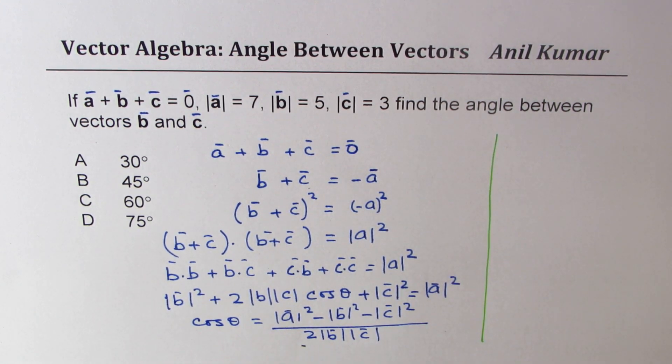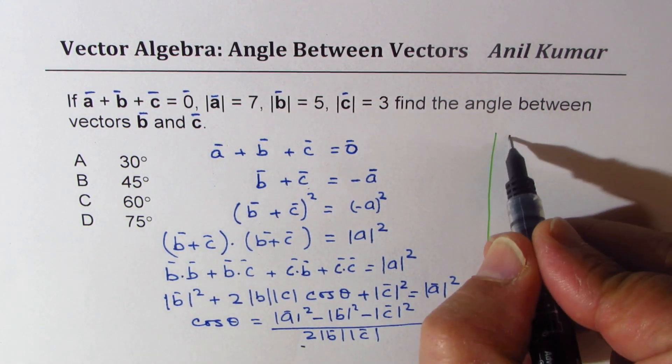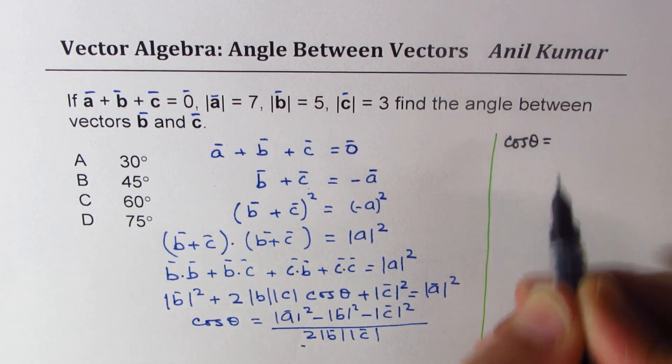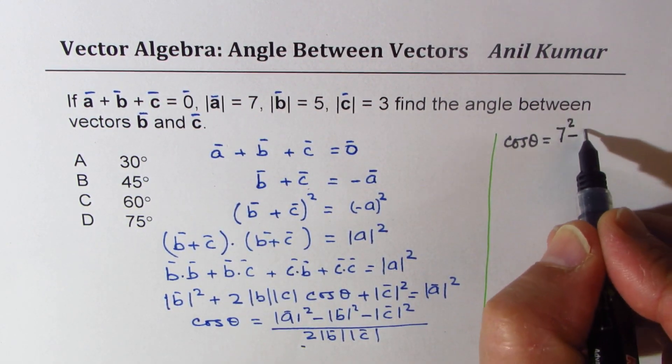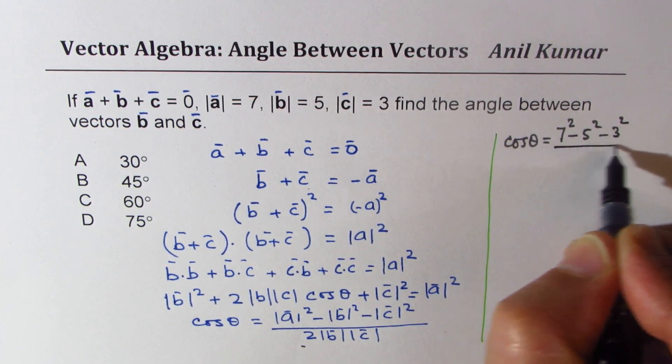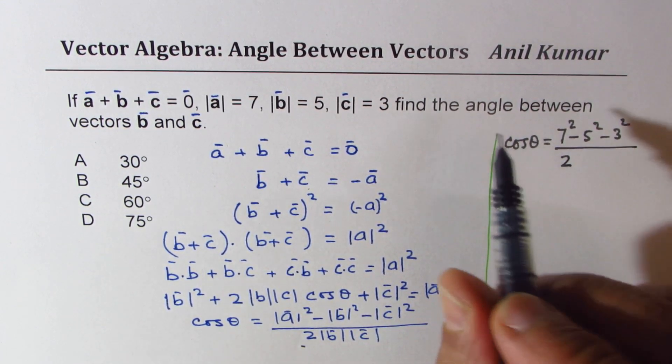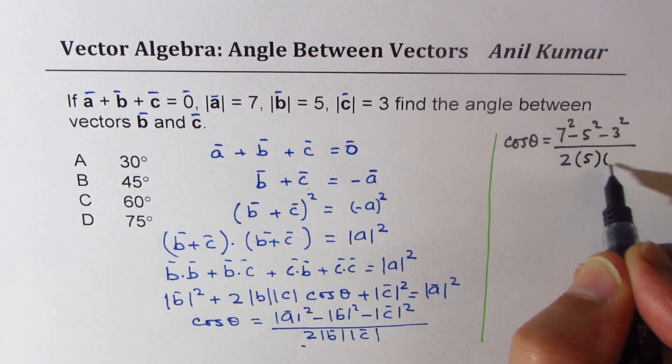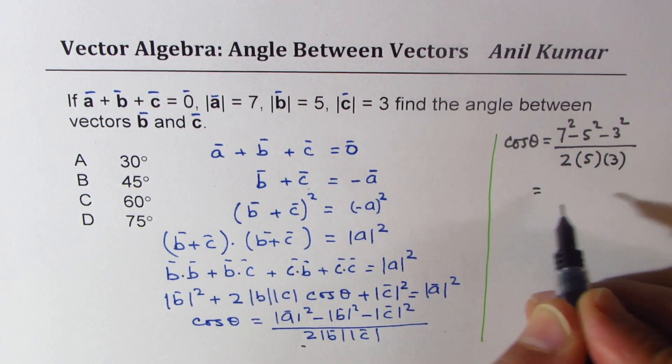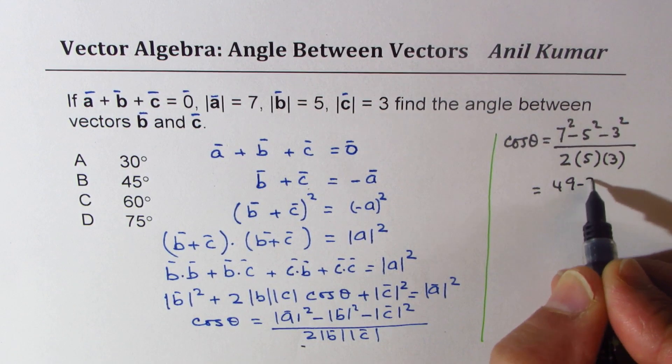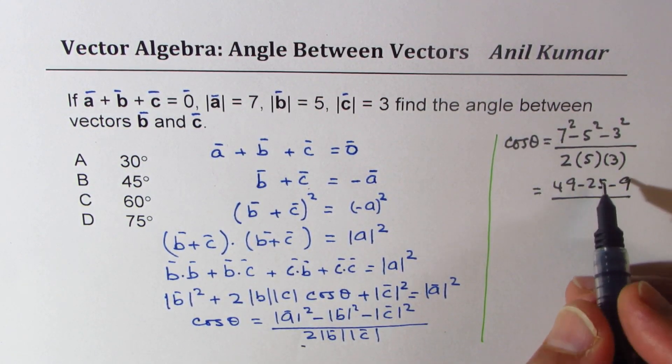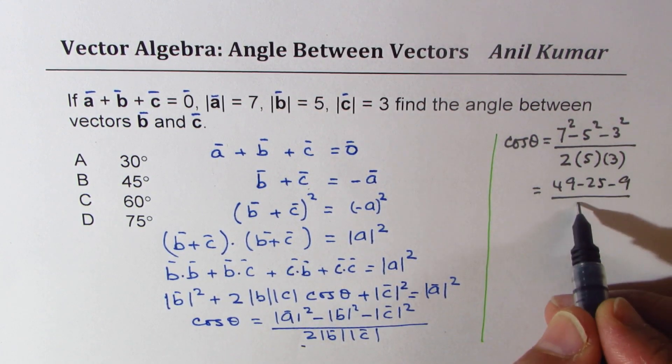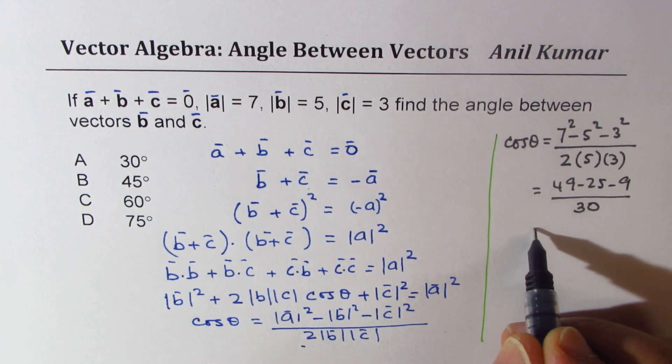Let's substitute the values and calculate the answer. We get cos theta equals 7² minus 5² minus 3² divided by 2 times 5 times 3, which is 49 minus 25 minus 9 over 30.